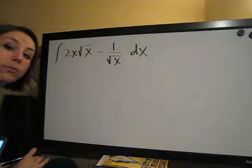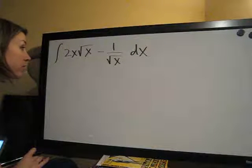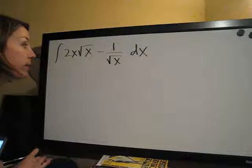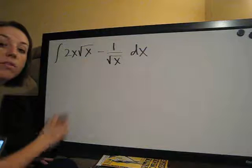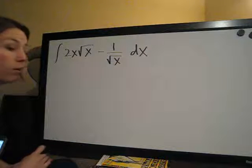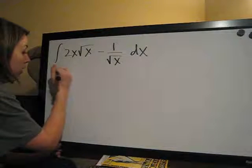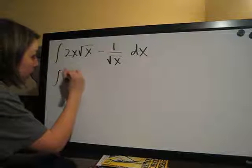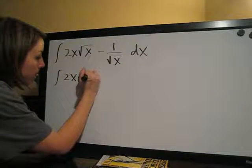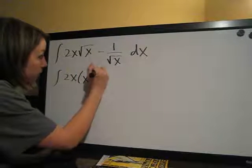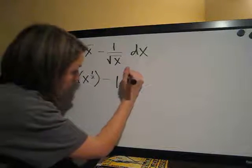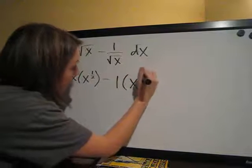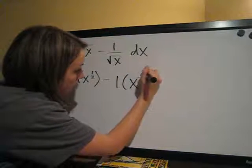First thing we want to do is convert this to something that's easier to integrate. As a rule, we stated it in a previous video, the square root of x is the same thing as x to the 1 half, always, so we are going to change this to 2x times x to the 1 half minus 1, and let me explain this in a second, x to the negative 1 half.